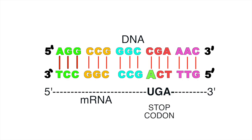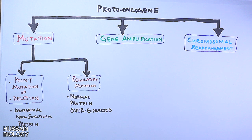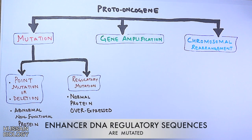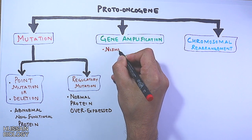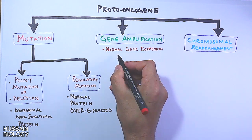Regulatory mutations mostly happen when enhancer sequences on the DNA are mutated and the regulation of the gene is compromised, causing the normal gene to be overexpressed. In gene amplification, the normal gene's expression is amplified, leading to overexpression of the normal protein, which ultimately leads to oncogene formation.